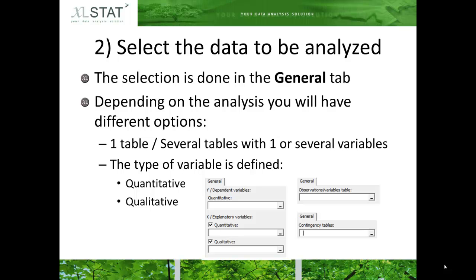Once the dialog box is open you must select the data you wish to analyze. The selection is done on the General tab. Depending on the analysis there will be different options — one or several tables containing one or several variables. The type of expected variable is defined in the dialog box to ease your use. You may select qualitative or quantitative variables.